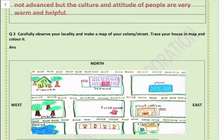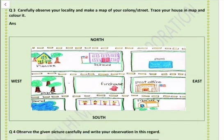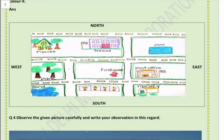Question number 3: Carefully observe your locality and make a map of your colony street. Trace your house in the map and color it. You need to make a map including your school, your house, and everything around your house, and arrange them according to directions — north, south, east, west.